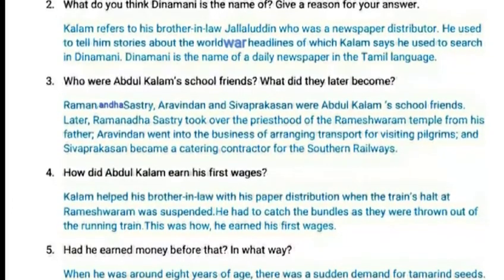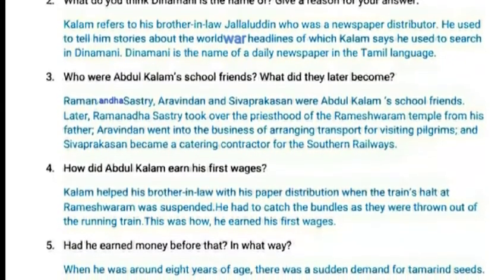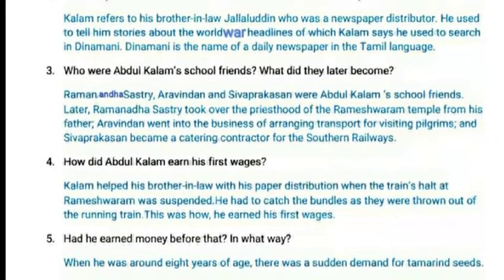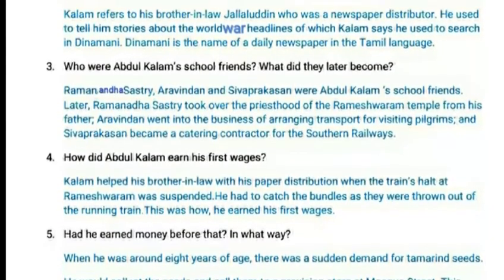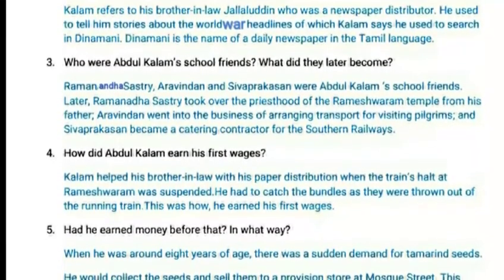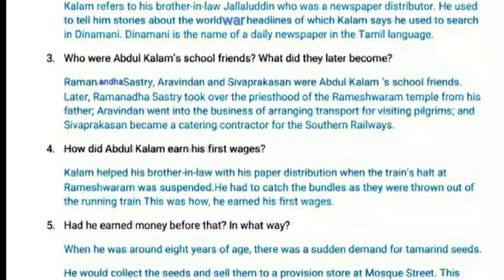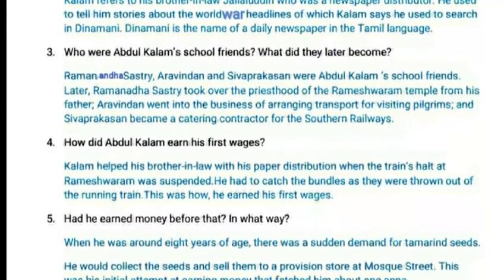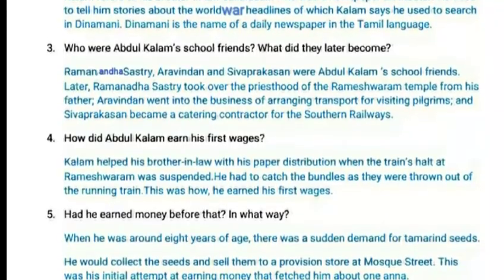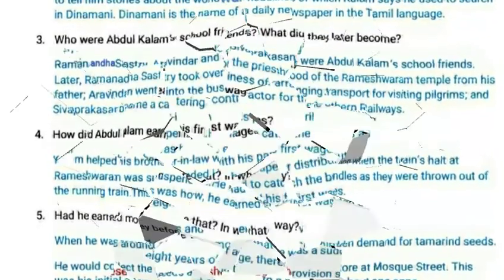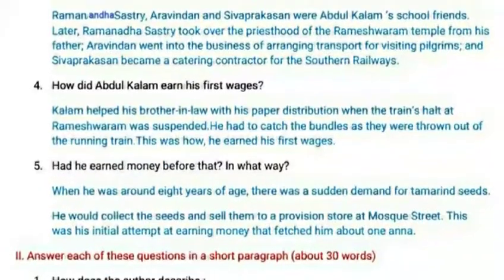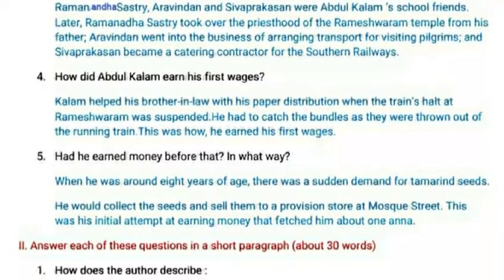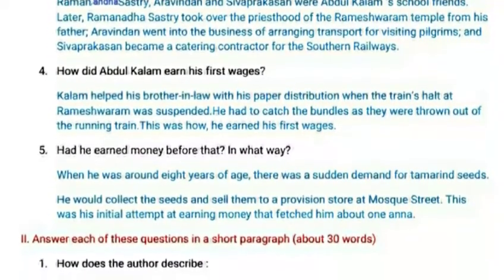Question 5: Had he earned money before that? In what way? When he was around eight years of age, there was a sudden demand for tamarind seeds. He would collect the seeds and sell them to a provision store on Mosque Street. This was his initial attempt at earning money, which fetched him about one anna.